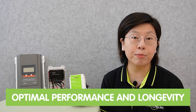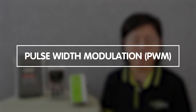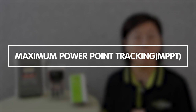These controllers serve as indispensable components in solar power systems, ensuring the optimal performance and longevity of the connected batteries and appliances. The importance of the solar charge controller lies in its ability to regulate the voltage and current coming from the solar panel, which can reach up to 18V, and channel it appropriately for charging batteries and powering devices. There are two main types: Pulse Width Modulation (PWM) and Maximum Power Point Tracking (MPPT).